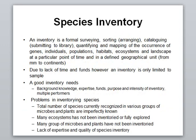What is species inventory? Inventory is a formal survey — it is a kind of sorting, meaning arranging the data, cataloging the data, and submitting that collected data somewhere in a library or department. It involves quantifying and mapping the occurrence of genes, individuals, populations, habitats, ecosystems, and landscapes.